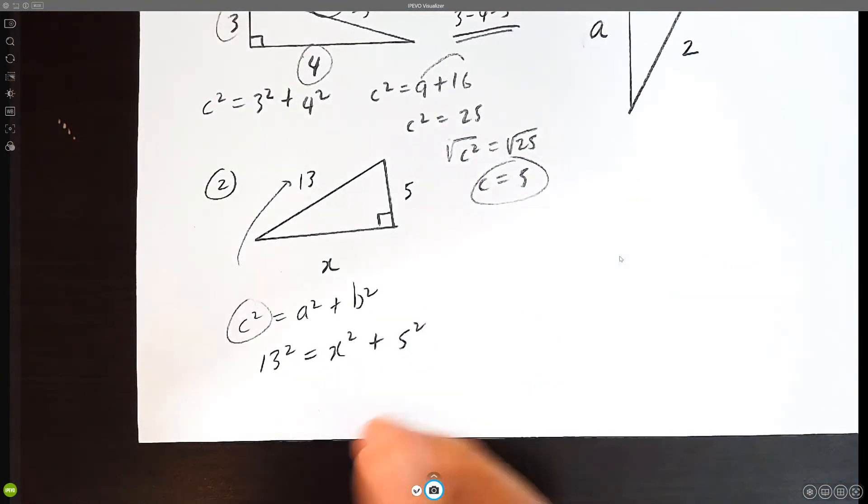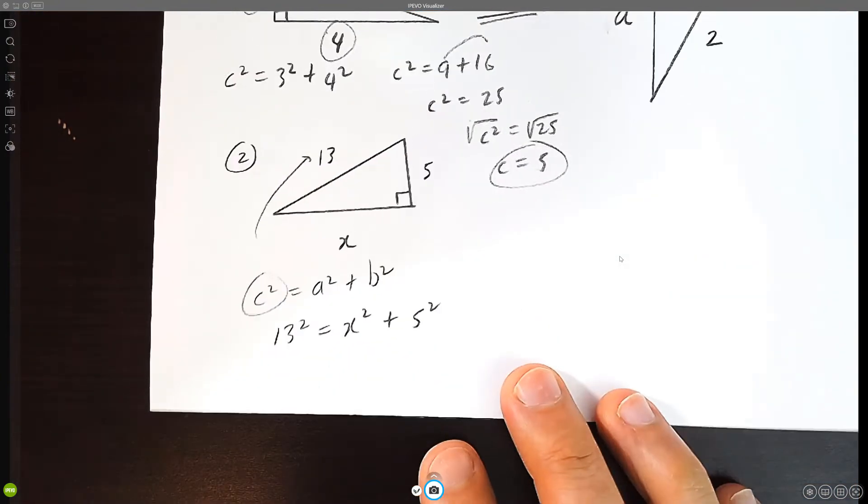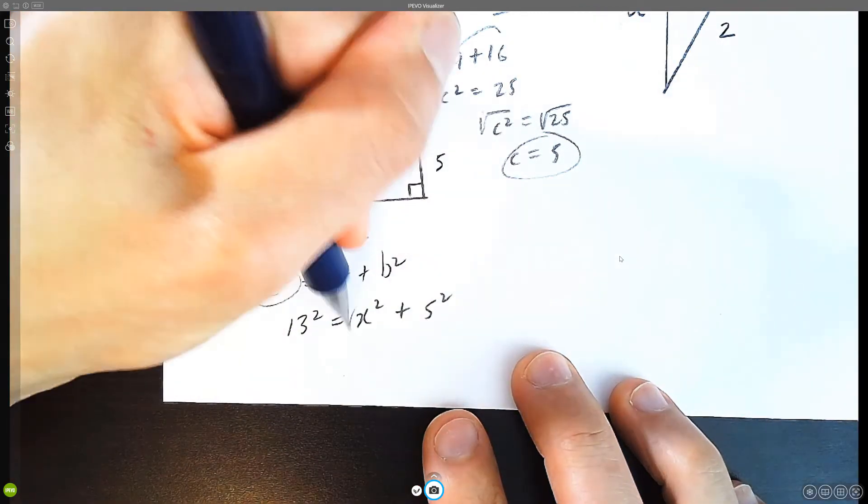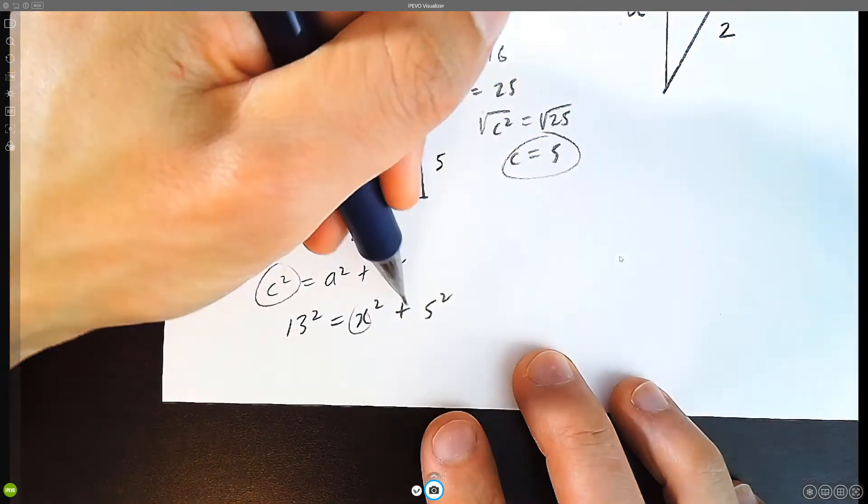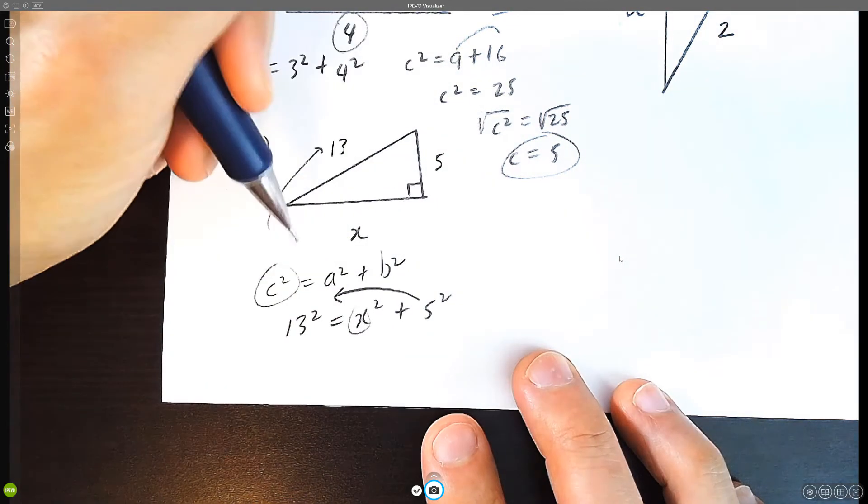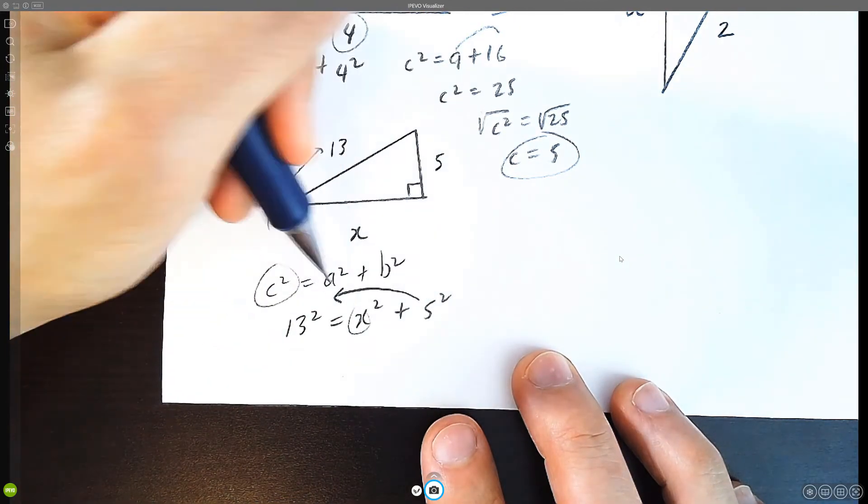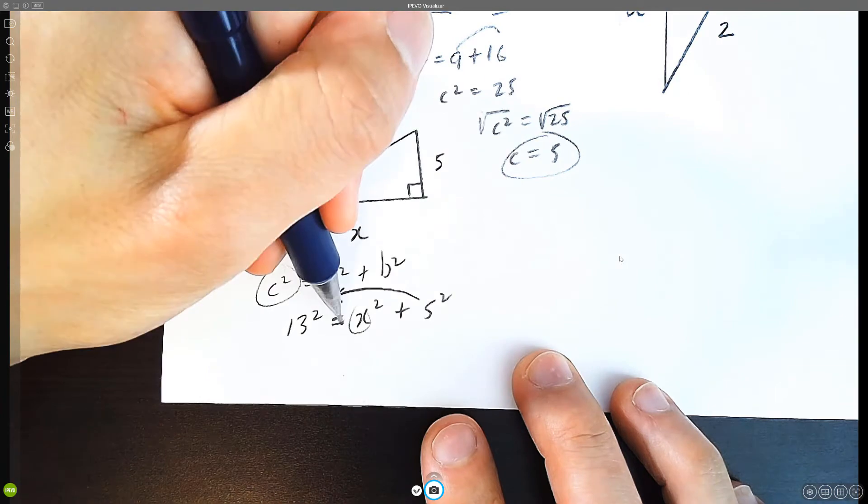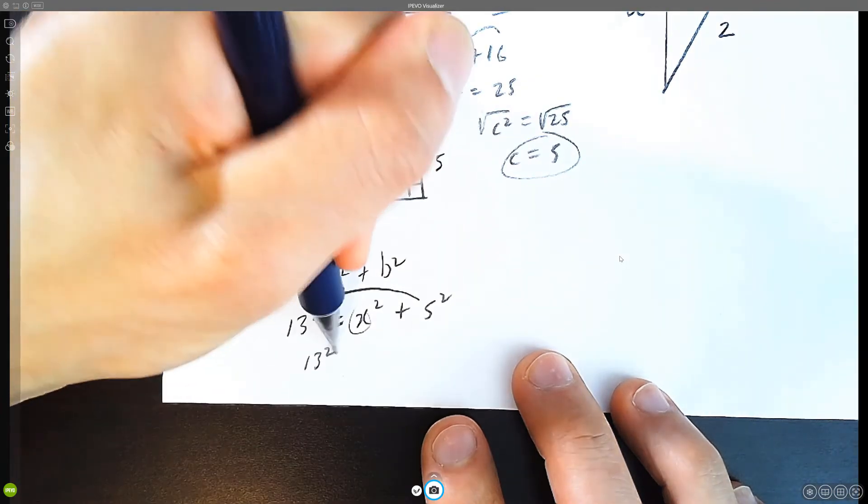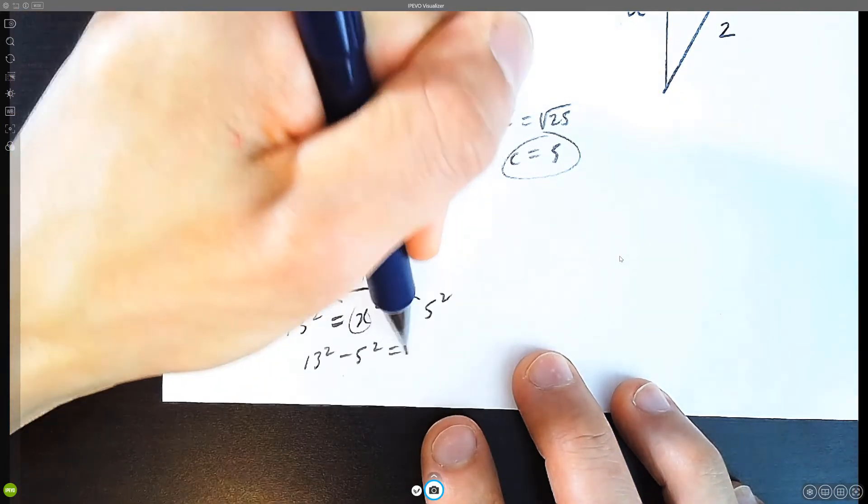Because addition is commutative, you can flip these. So we're trying to solve for x. We're going to throw the five squared over to the other side. The positive becomes a negative when you throw it across the equal sign here. So thirteen squared minus five squared equals x squared.